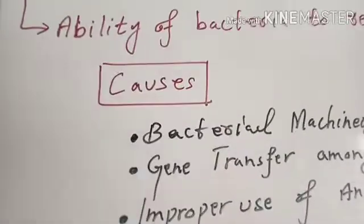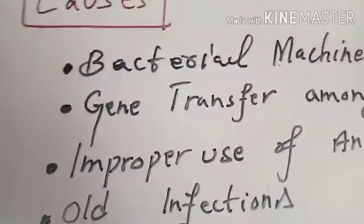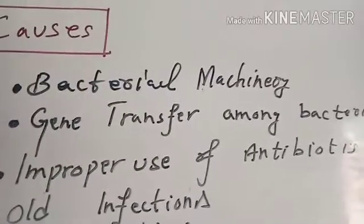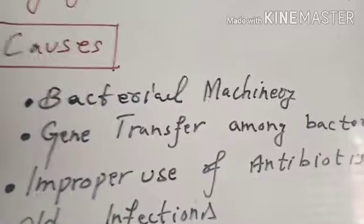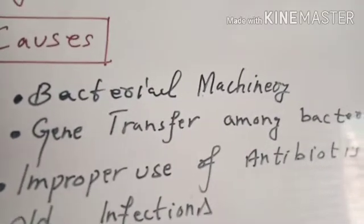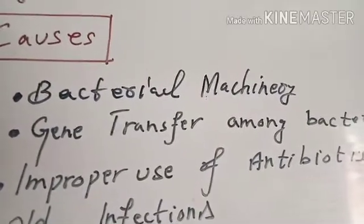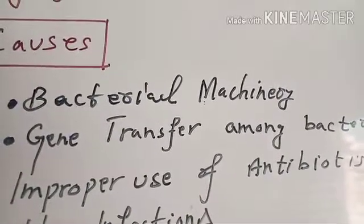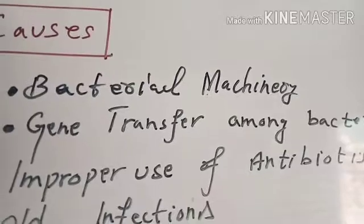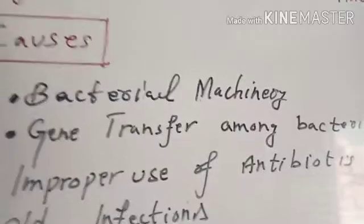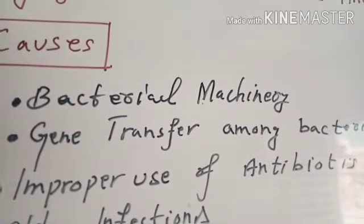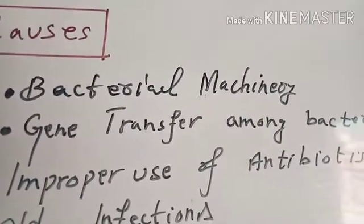Another cause is the improper use of antibiotics. Improper use means using an antibiotic for a disease which doesn't require antibiotics — for example, using an antibiotic for a viral infection. Viral infections are not treated by antibiotics, so this is improper use. You are using an antibiotic for a disease for which that antibiotic has no efficacy — it doesn't show any form of treatment or relieving of the disease.